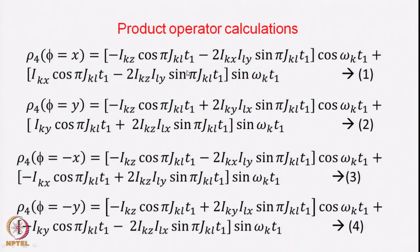We can see what happens through the product operator calculation. The same four equations from the DQF-COSY analysis are used. With φ = x (0-degree phase), the density operator ρ₄ is the same as in COSY: −IKz·cos(πJKL·t1) − 2IKx·ILy·sin(πJKL·t1)·cos(πJKL·t1)·sin(ωK·t1). When φ is changed to 90 degrees, the signs and operators change accordingly, giving terms with +2IKy·ILx and IKy.